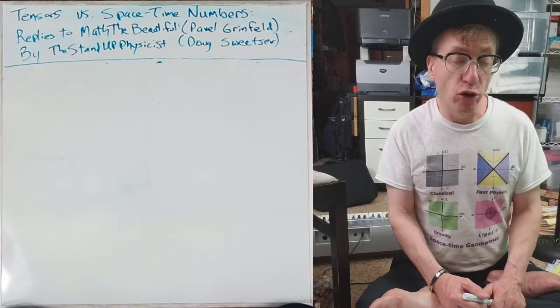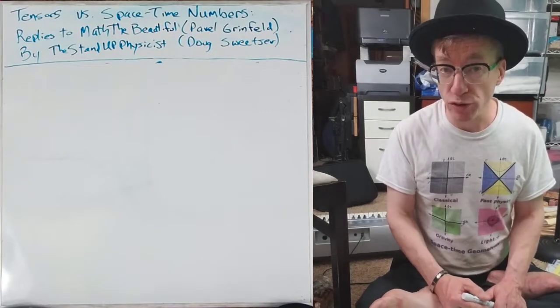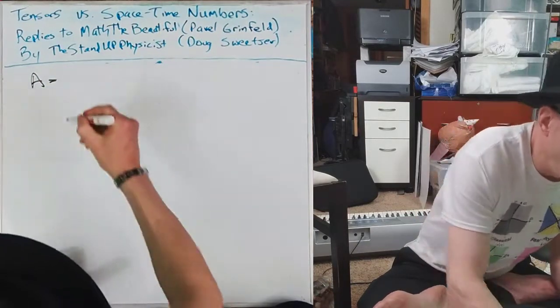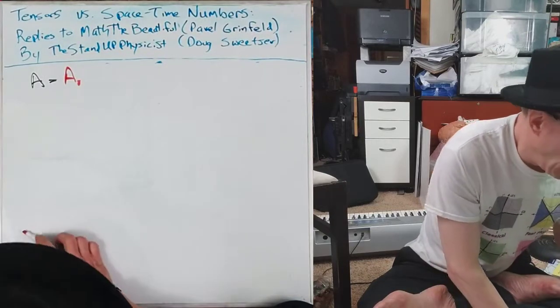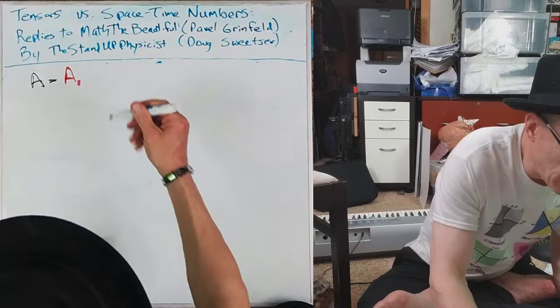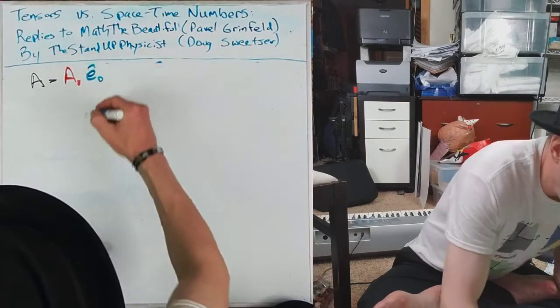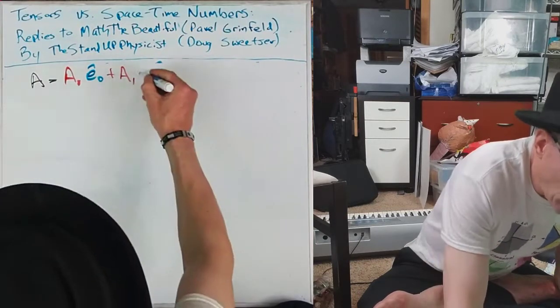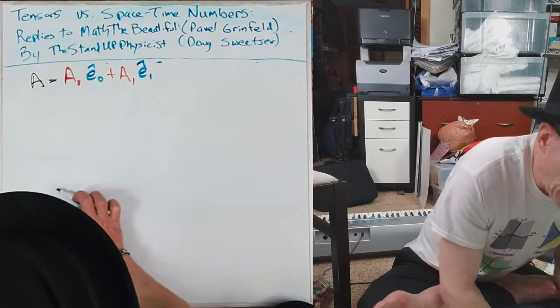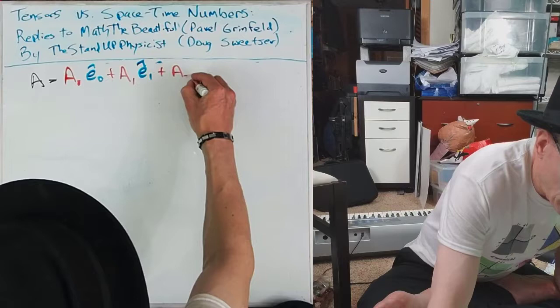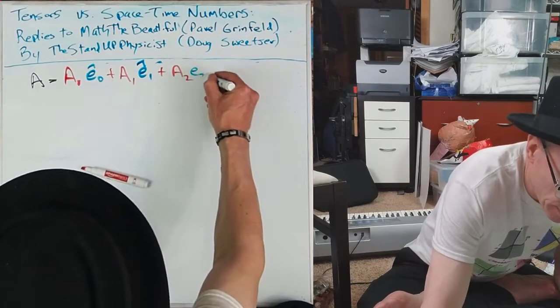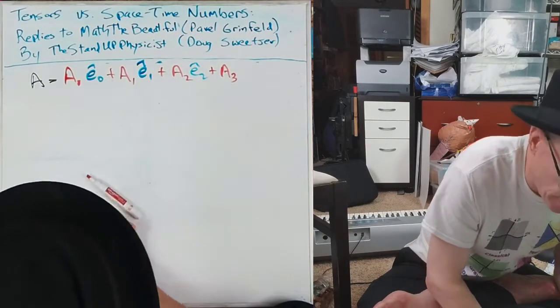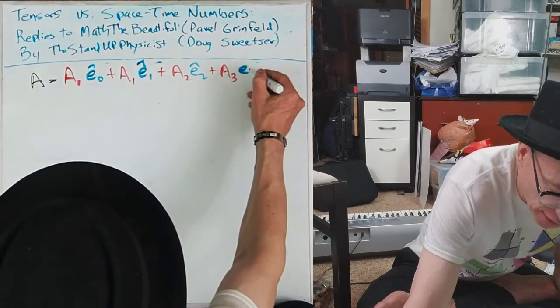So I'm going to talk about vector components. If you have a vector A, it's got a magnitude, we'll call it A_0, and it has a basis vector, e-hat_0. If it's a two-dimensional vector space, we'll write two of these down. We could write a third one down, and I bet you're seeing a pattern here. We can write down as many of these components as is appropriate for the vector space that we decide to work with.